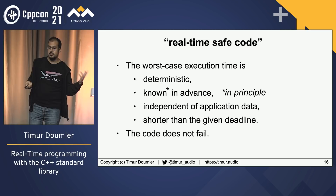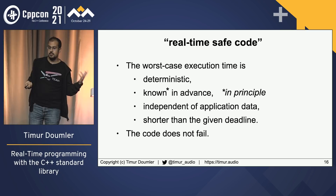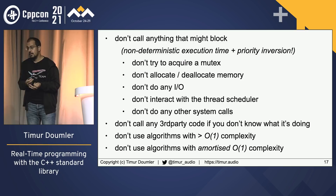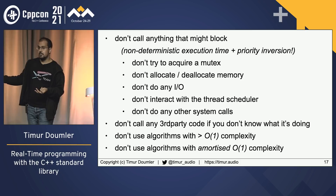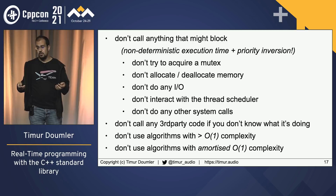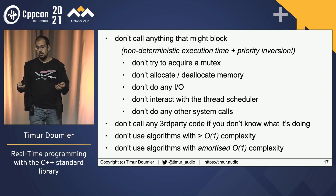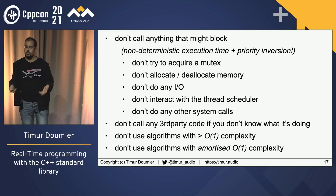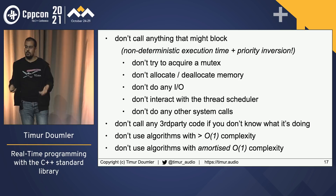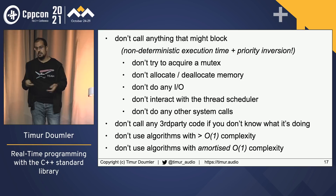What properties does code need to be real-time safe? You shouldn't call anything that might block — don't wait on a mutex because you don't know how long that'll take or what priority the other thread holds. You also have priority inversion to worry about. You can't directly acquire a mutex or call anything that acquires one internally. You cannot allocate or deallocate dynamic memory, do I/O, interact with the thread scheduler, make system calls, or call third-party code whose behavior you don't know.